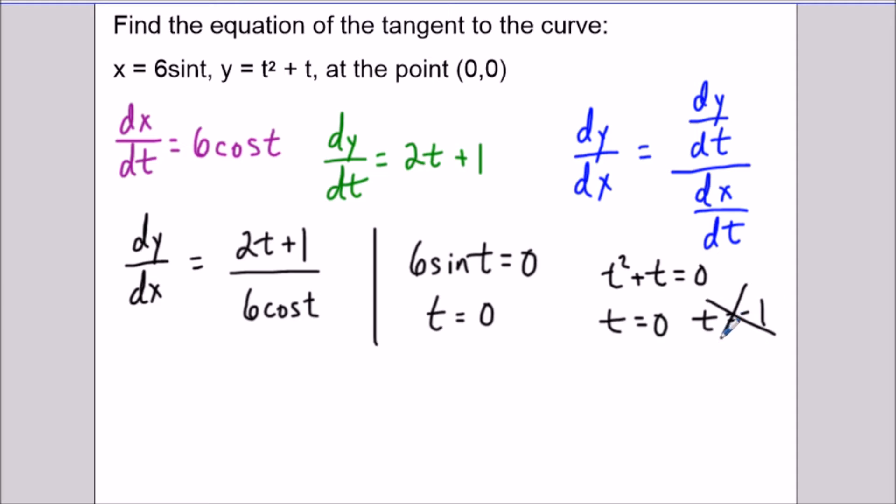But we could reject t equals negative one. Because if we were to set up the equation negative one equals 6sin(t), then that wouldn't have a solution. So we have to discard the second, t equals negative one here. Well, it would have a solution, but it wouldn't give you (0,0) as the point here. We would get some non-zero solution for that particular value of t.